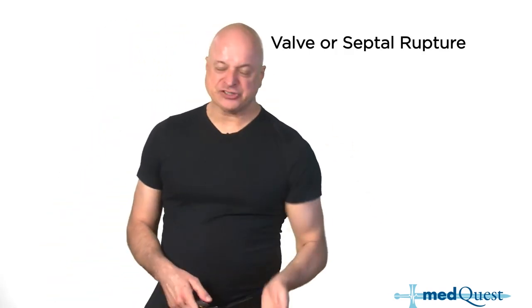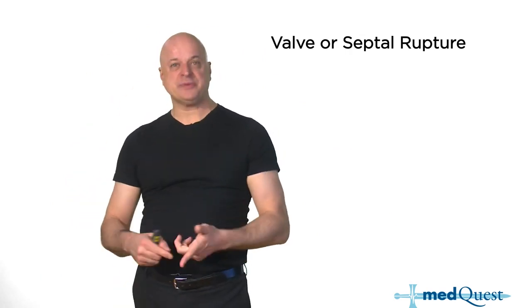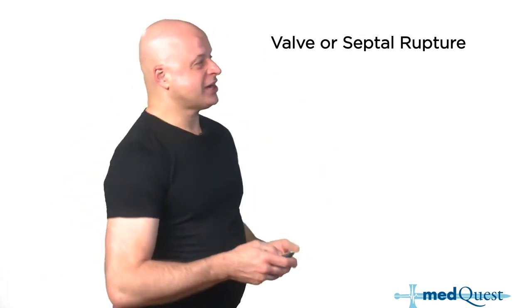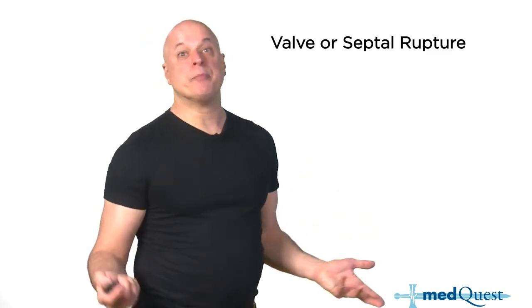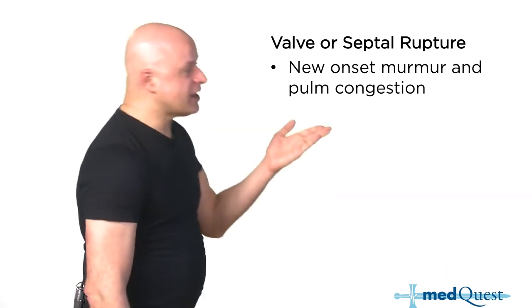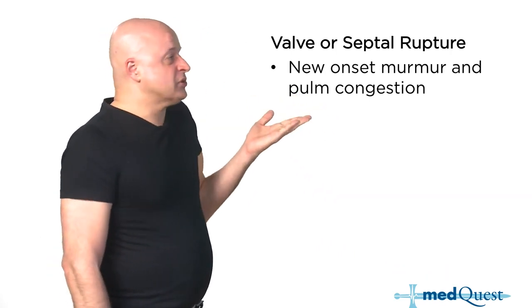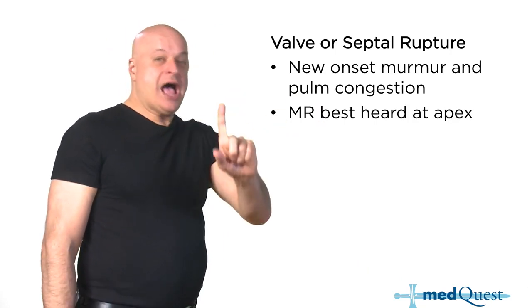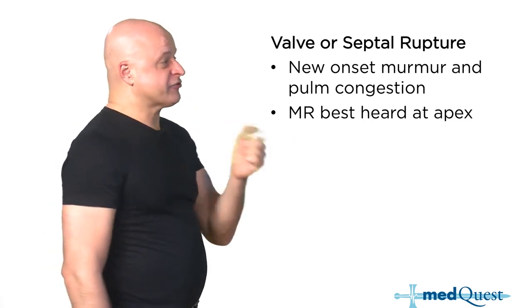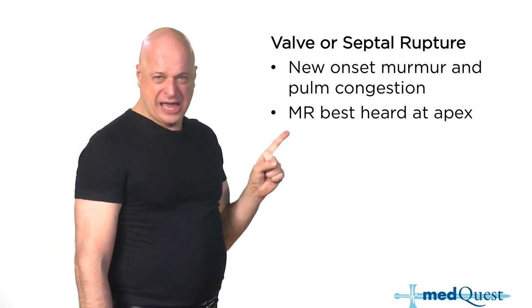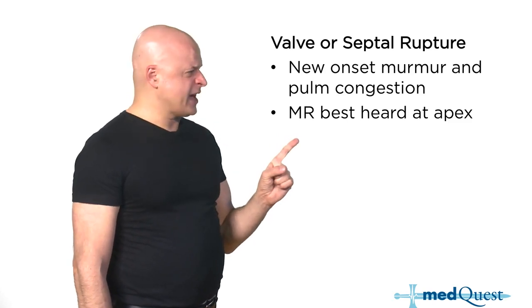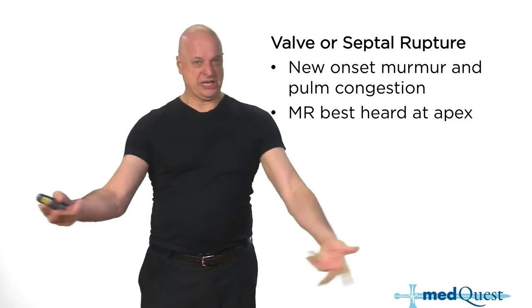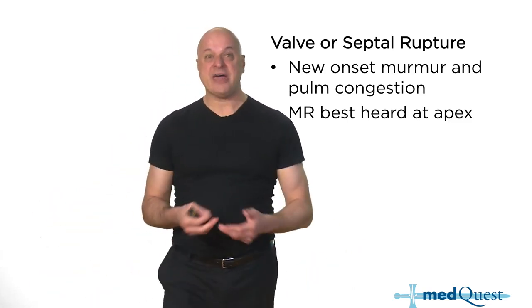Valve and septal rupture are signs of much less treatment — necrotic tissue that has burst through. The difference from tamponade and wall rupture is that here you blow the valve and get shortness of breath, hypotension, and congestion in the lungs. The patient with a 3 over 6 systolic murmur at the apex — that's the most common wrong answer because people see that murmur and say valve rupture.